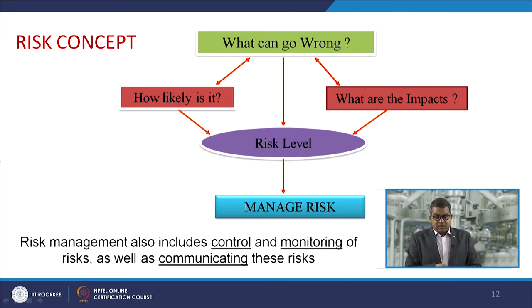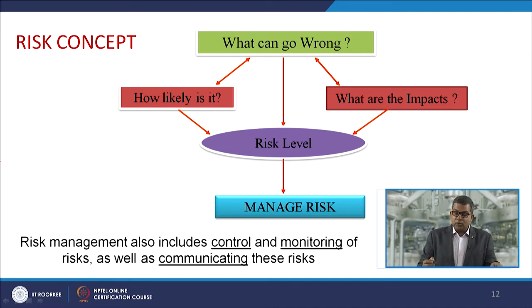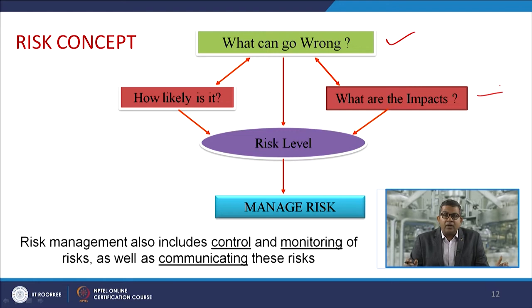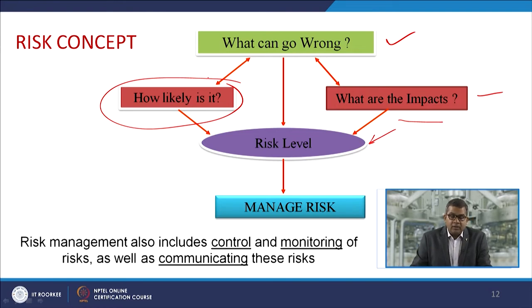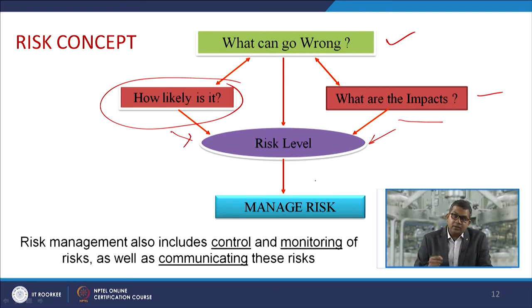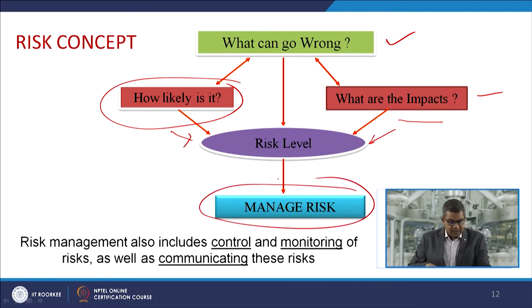Whenever we discuss risk, we must be aware of the risk flowsheet. We must know what can go wrong, what the impacts of those wrong happenings are, and — once analyzed — what the level of risk is and how much consequence it carries. Another aspect is how likely it is, what the frequency is. Based on that, you analyze the risk level. If it is acceptable, go ahead; if not, you need to manage that risk. Risk management also includes control and monitoring of risk, as well as communicating those risks to nearby people who may be affected.